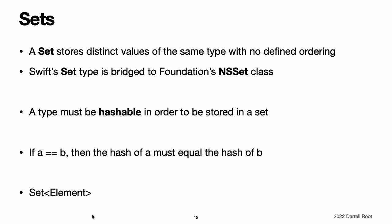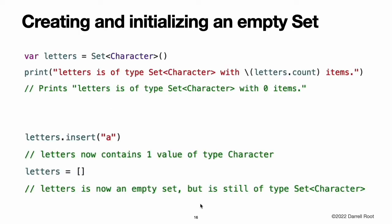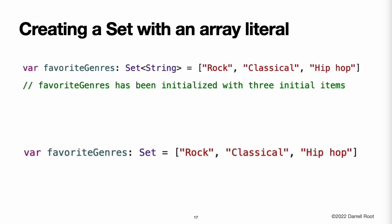Set Type Syntax. The type of a Swift set is written as Set<Element>, where element is the type that the set is allowed to store. Unlike arrays, sets do not have an equivalent shorthand form. Creating and Initializing an Empty Set. You can create an empty set of a certain type using initializer syntax. The type of the letters variable is inferred to be Set<Character> from the type of the initializer. If the context already provides type information, you can create an empty set with an empty array literal. Creating a Set with an Array Literal. You can also initialize a set with an array literal as a shorthand way to write one or more values as a set collection.